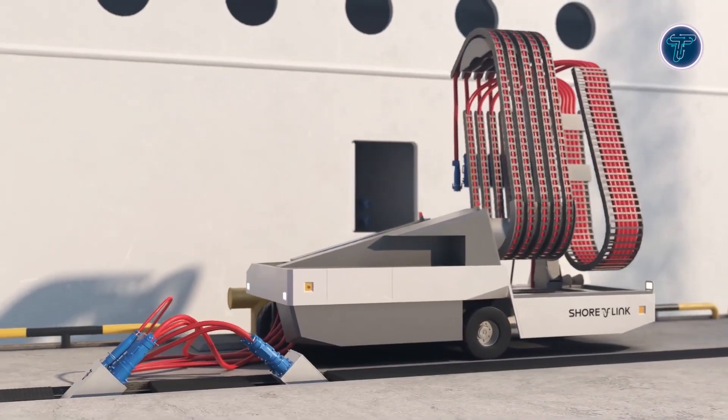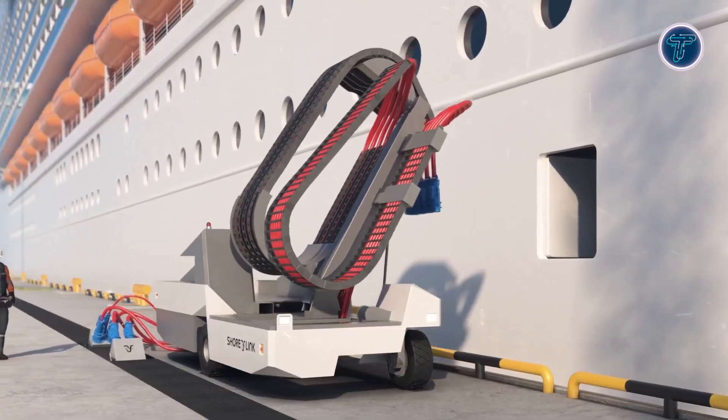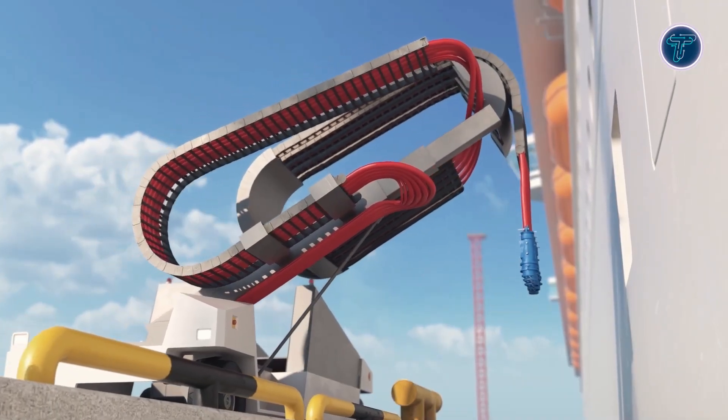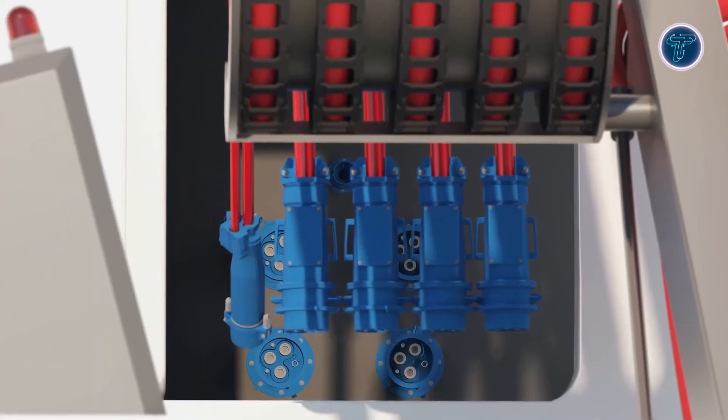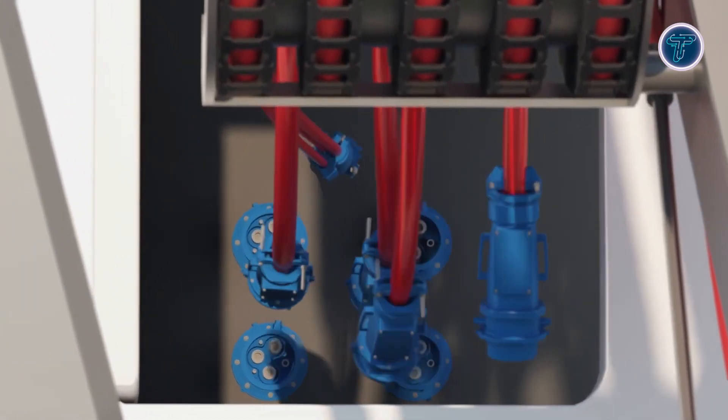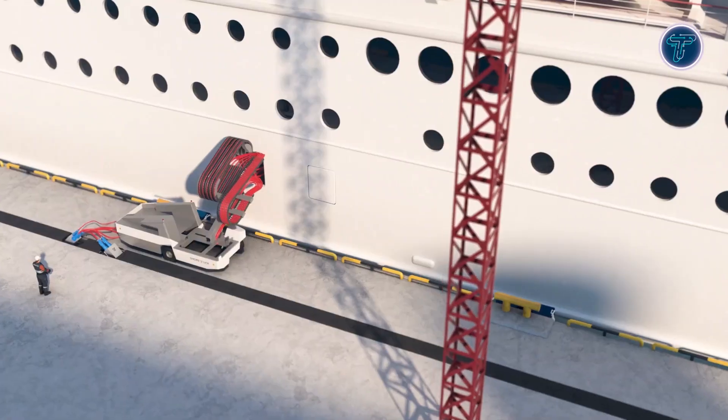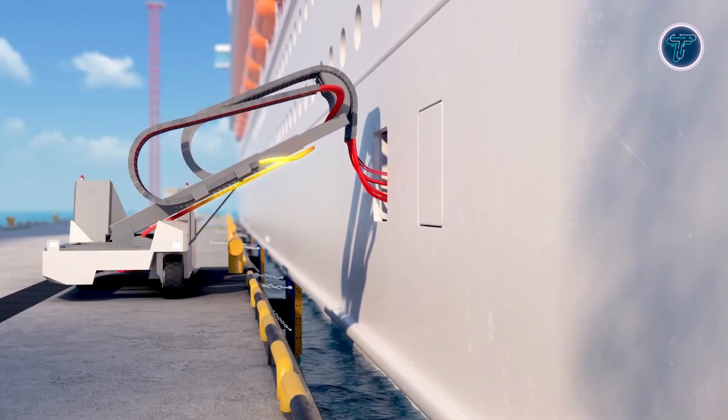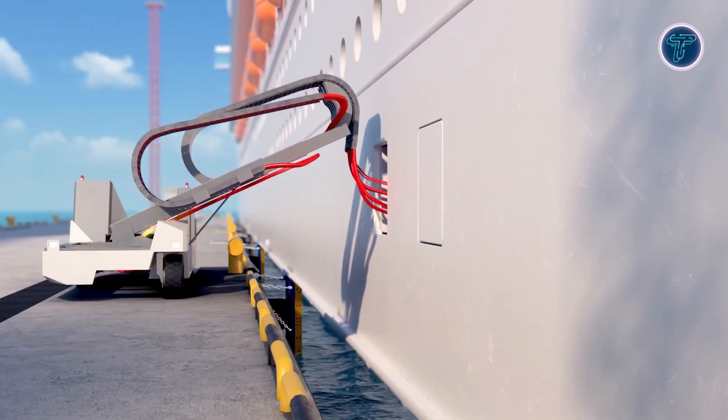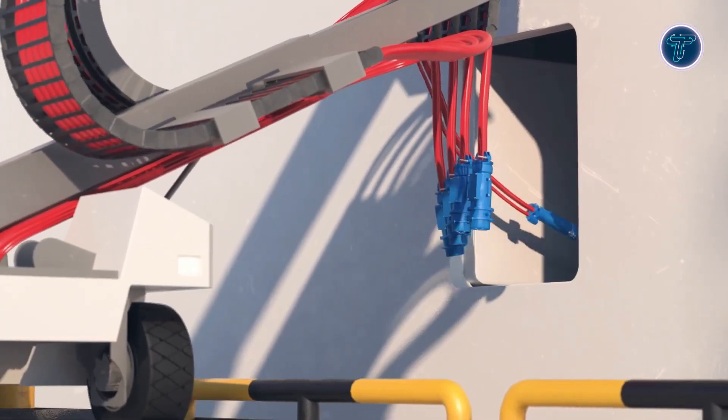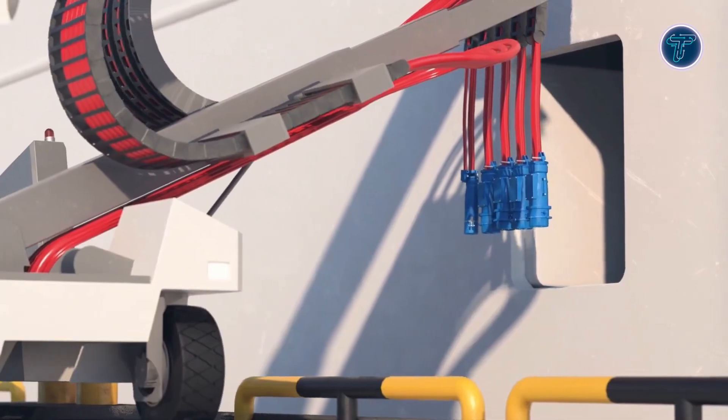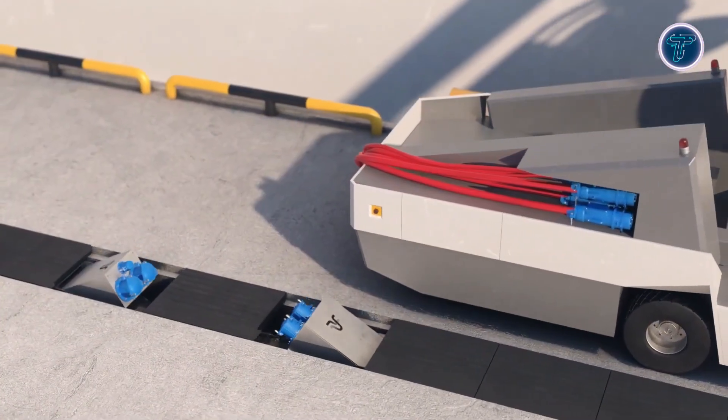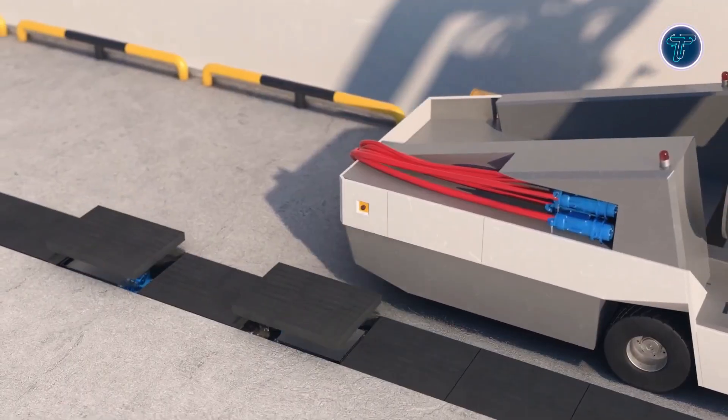Supporting up to 11kV shore power, the system includes an active height compensation system, which automatically adjusts for tides or ship movement to maintain stable and reliable power transfer. Lightweight and maneuverable, it can be operated by a single person and fits ports where space is limited. By enabling ships to draw electricity directly from shore instead of running engines while docked, CruiseLink Mobile S Chain reduces emissions, lowers operational costs, and enhances safety. It represents a practical, space-efficient, and sustainable solution for the future of maritime operations.